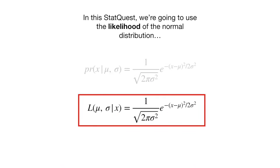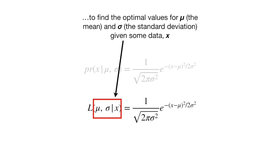In this StatQuest, we're going to use the likelihood of the normal distribution to find the optimal parameters for mu, the mean, and sigma, the standard deviation, given some data x.